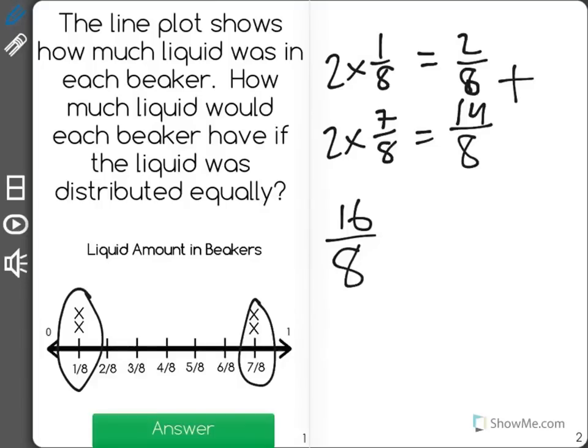Now it wants to know if each beaker had the same amount, how much there would be. Looking at it, I can count 1, 2, 3, 4 x's. That means that there were 4 beakers.